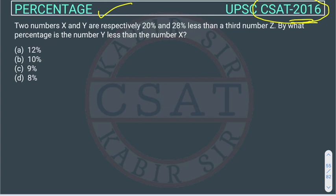The question is: two numbers X and Y are respectively 20% and 28% less than a third number Z. So there are three numbers: X, Y, and Z.